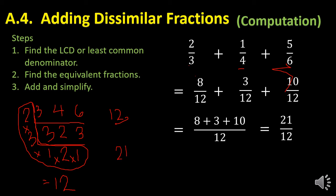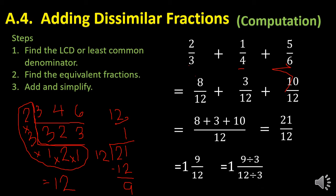This is an improper fraction, so I rename it. I ask: how many times does twelve go into twenty-one? Only once. One times twelve is twelve. Subtracting: twenty-one minus twelve gives nine as the remainder. So I have the whole number one and nine over twelve. I can still reduce nine over twelve — three divides both nine and twelve. So nine divided by three is three, and twelve divided by three is four. Therefore the answer is one and three fourths.